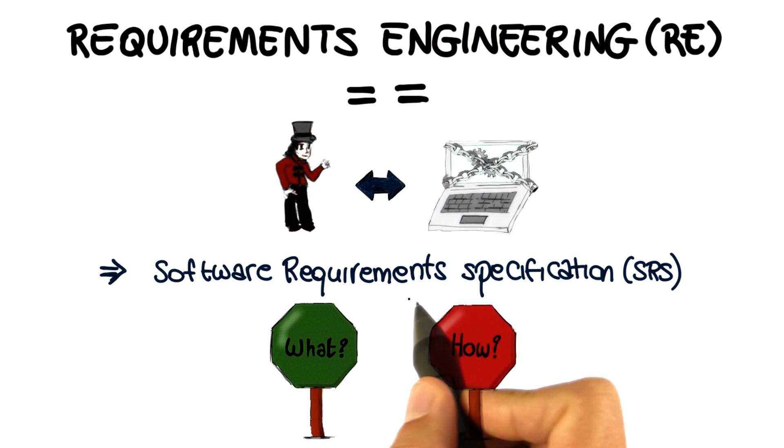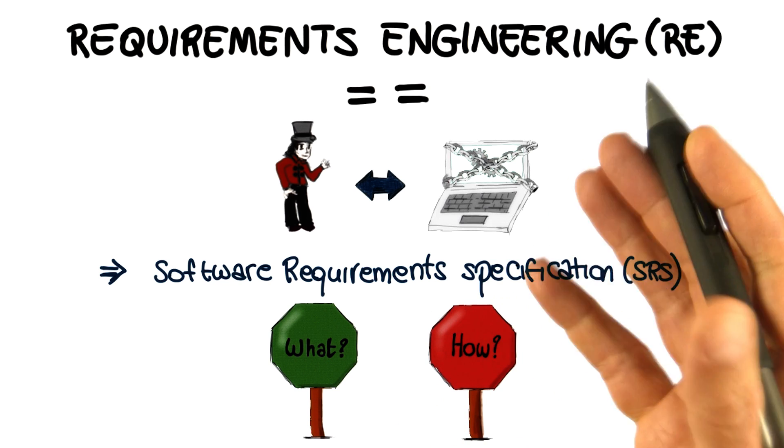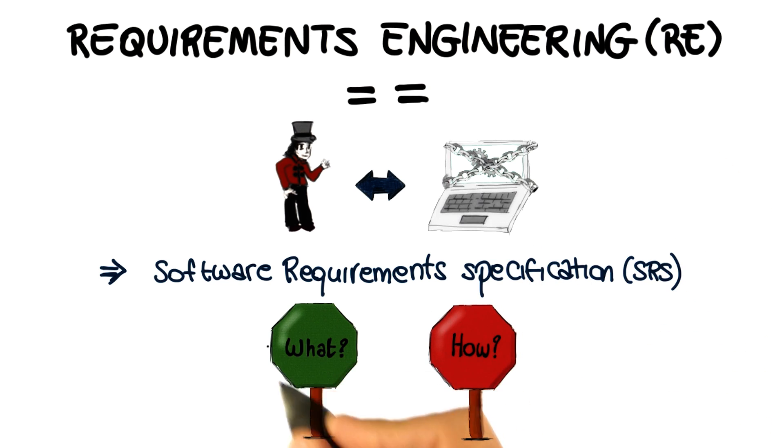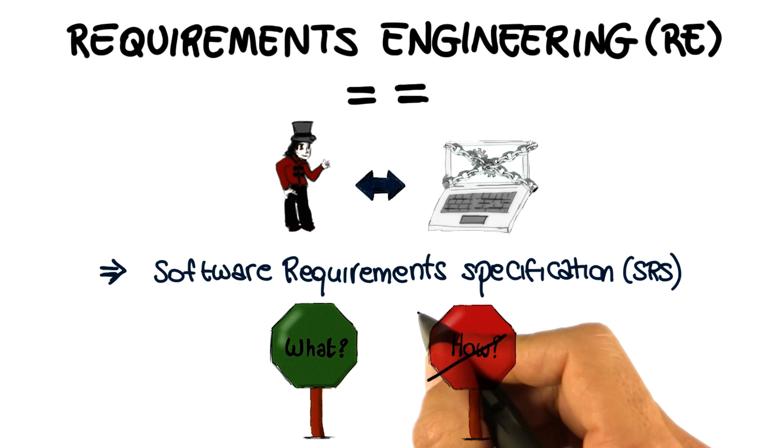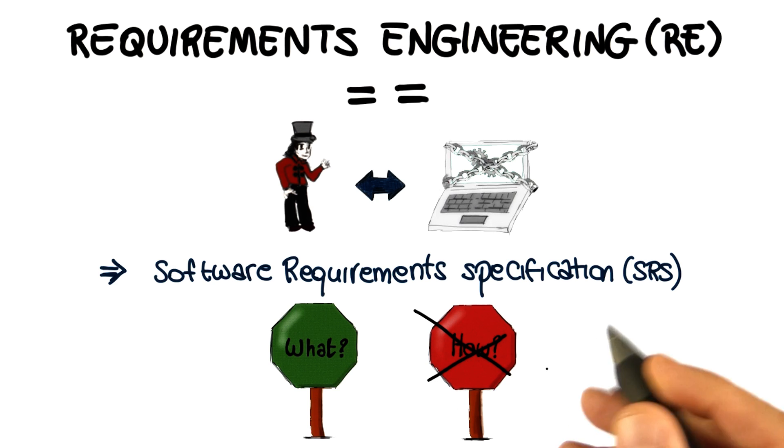For now, it is enough to say that the software requirements specification and requirements engineering in general should focus on what the proposed system is intended to do and not on how it will do it. In fact, how the system will do what it is required to do is something that we will discuss when we talk about design of a system in later phases.